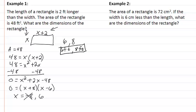In example 2, we are given that the area of the rectangle is 72 centimeters squared. If the width is 6 centimeters less than the length, what are the dimensions of the rectangle?